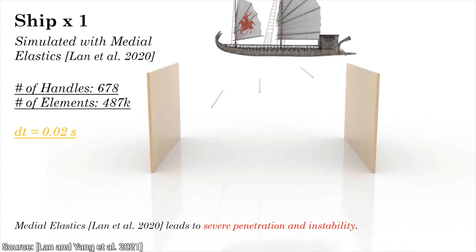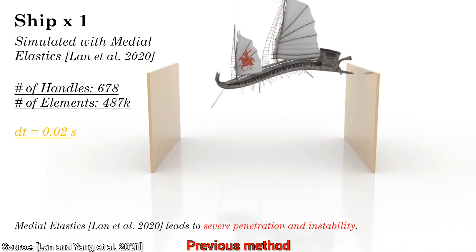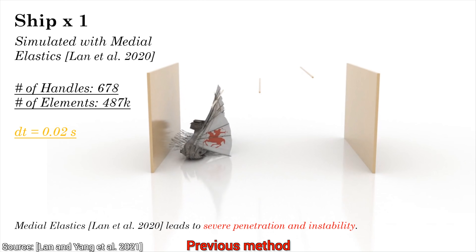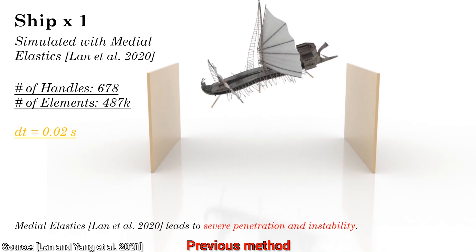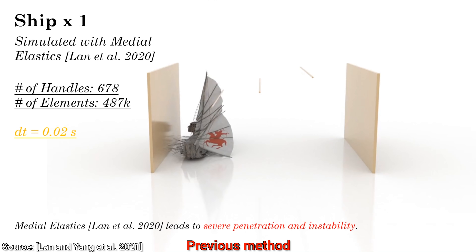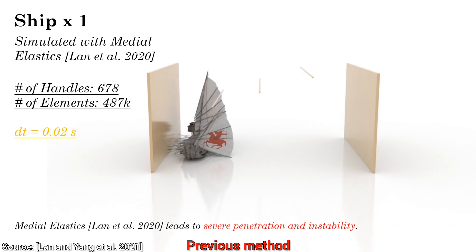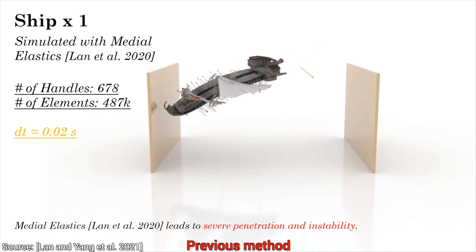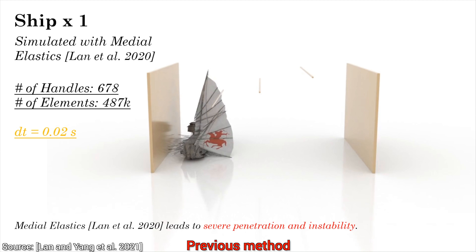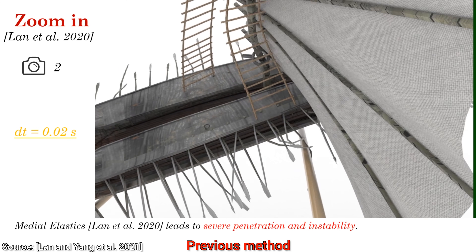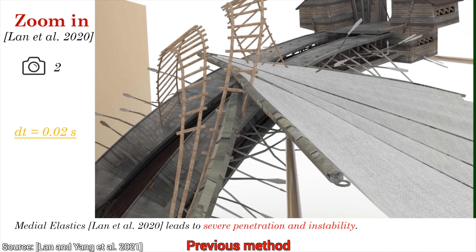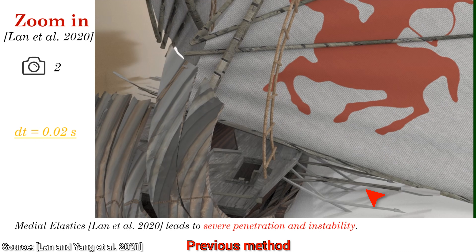Let's see this phenomenon through a previous method from just a year ago. Here, we set the time step size relatively small and drop an elastic barbarian ship onto these rods. This is a challenging scene because the ship is made out of half a million tiny elements, and we have to simulate their interactions with the scene. This isn't good — issue number one is that the simulation is unstable. Things remain in motion when they shouldn't.